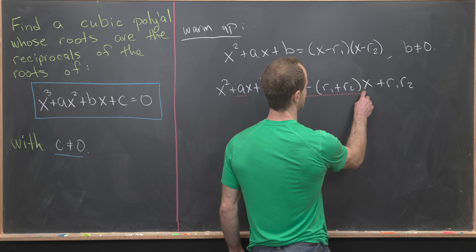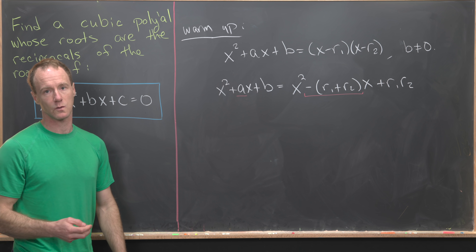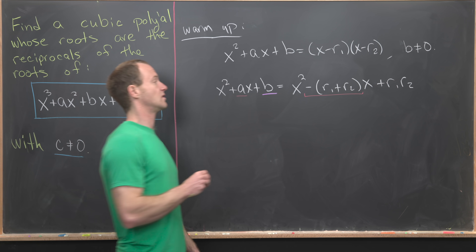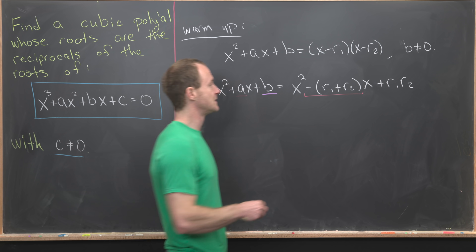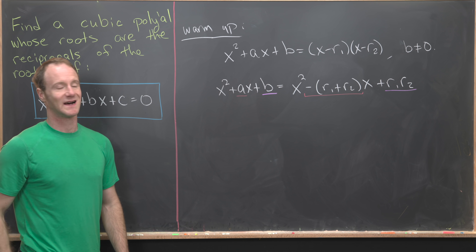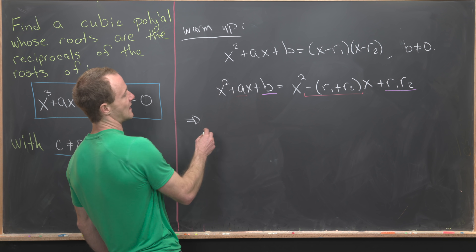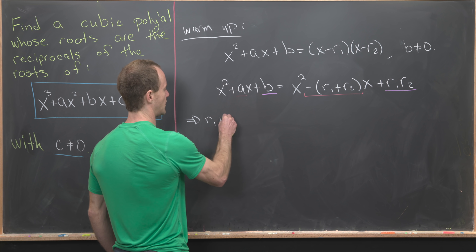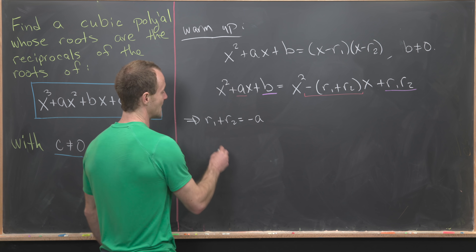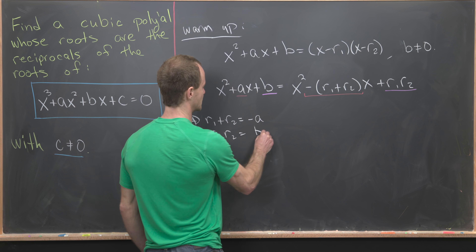Equating coefficients on both sides: the coefficient of x on the left is a, and on the right is minus (r1 plus r2); the constant term on the left is b, and on the right is r1 times r2. So we get r1 plus r2 equals negative a, and r1 times r2 equals b.